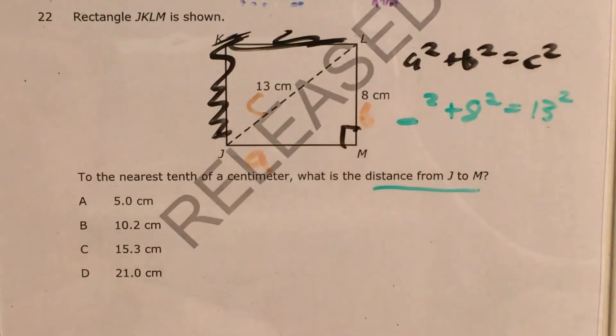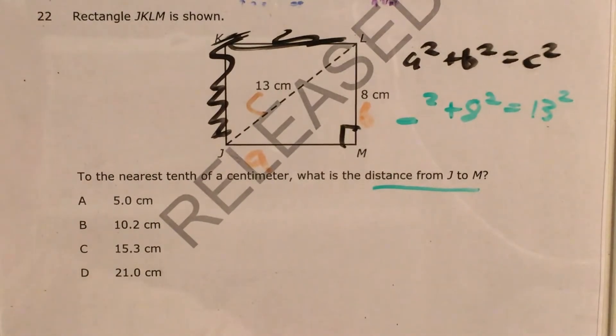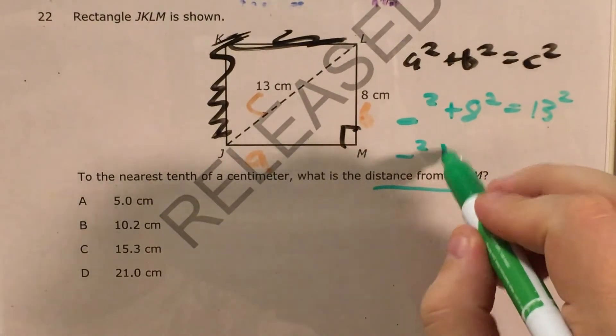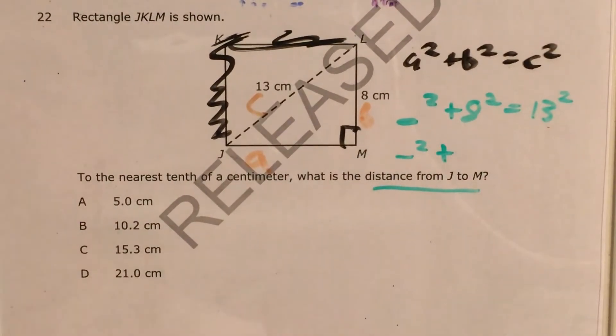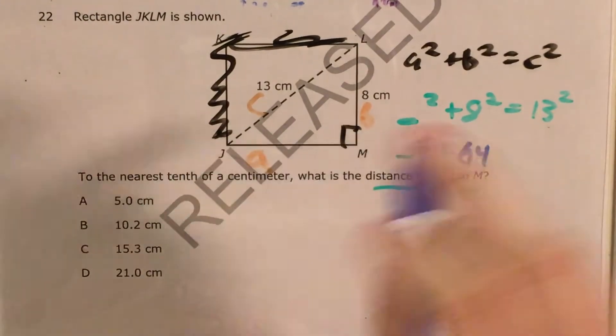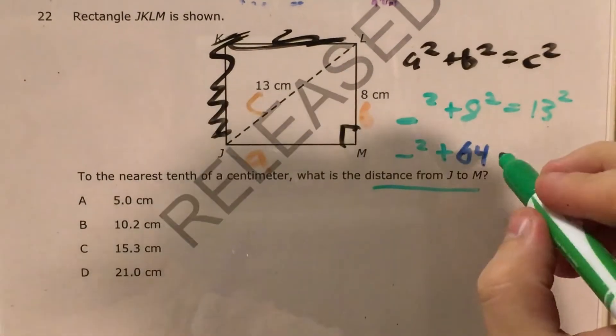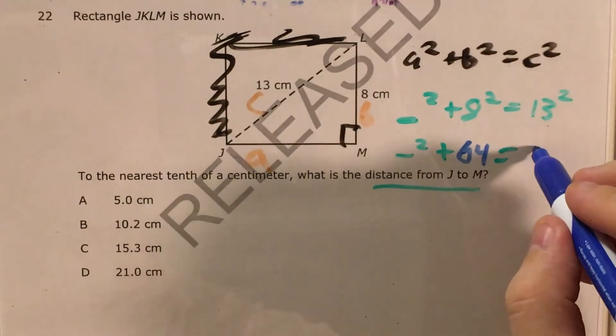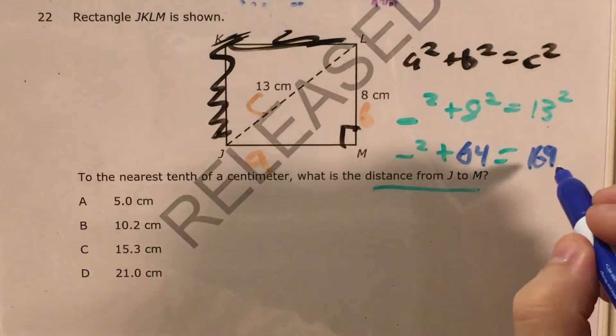And at this point, the best thing I can do is just go ahead and square both of these numbers. So whatever this is squared, I don't know it yet, but I know that it's going to be added to. And 8 squared, I can use times tables or a calculator to get 64 for that. And that equals 13 squared. I can use times tables, my memory, or a calculator to get 169.